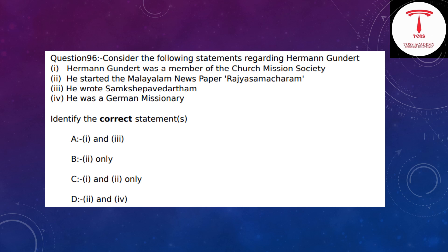Consider the following statements regarding Hermann Gundert: He was a member of the Church Mission Society; he started the Malayalam newspaper Rajyasamacharam; he wrote Samkshiptha Vedartham; he was a German missionary. The answer is option D — two and four.